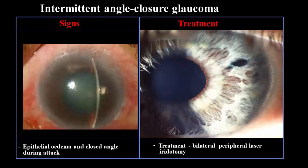Intermittent angle closure is the stage before the occurrence of acute congestive glaucoma, in which the pupil dilates for many reasons, especially in conditions of dim lighting. When the pupil becomes dilated, the angle is occluded by the peripheral iris, drainage of aqueous is obstructed, and a rise in IOP occurs. This leads to some degree of corneal edema and a drop of vision. When the pupil becomes miotic again, the angle opens, pressure decreases, corneal edema disappears, and vision returns to its normal state. During the attack, we can notice corneal edema due to the rise in IOP. Treatment of intermittent attacks is done by prophylactic bilateral peripheral YAG laser iridotomy.